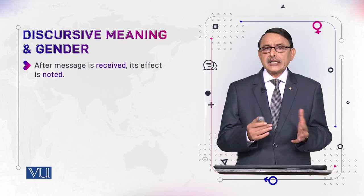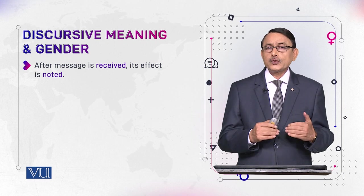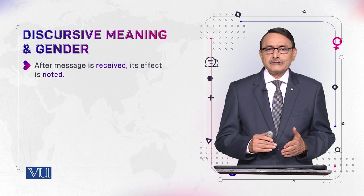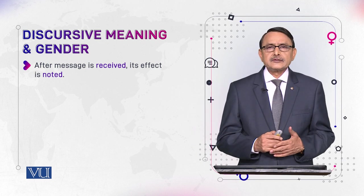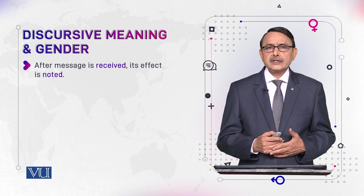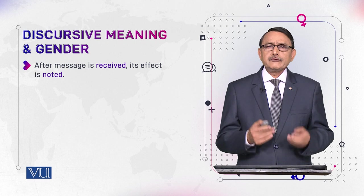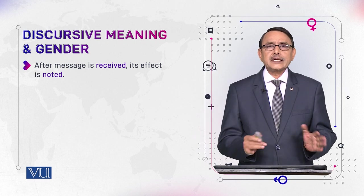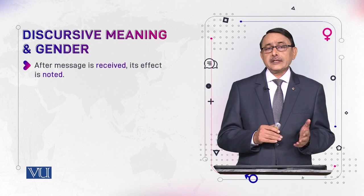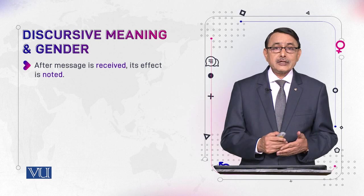After the message is received by the hearer or addressee, you also note its effect. If you remember speech act theory: when we say something this is locution, what we intend is illocution, and what effect it has on the addressee is perlocution. We are saying the same things in a different way. The effect we called perlocution in speech act theory is the same thing — we also see what happens after the message is received.